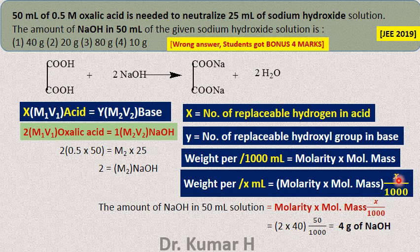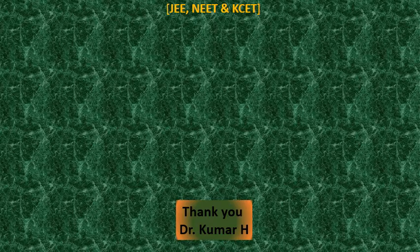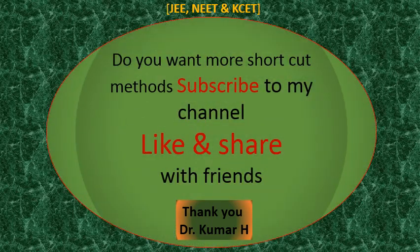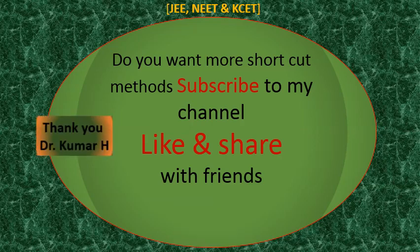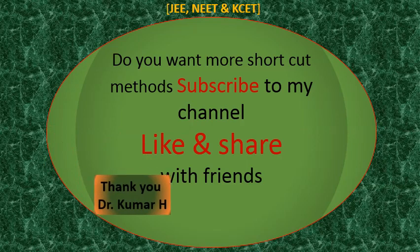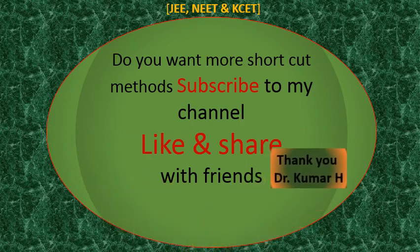Remember these two formulas: X × M₁V₁ = Y × M₂V₂ for acid-base titration, where X is replaceable hydrogens and Y is replaceable hydroxyl groups; and weight of material for x ml = molarity × molecular mass × (x ÷ 1000). With these two formulas, you can answer almost all questions on volumetric estimation. Please subscribe to my channel, like this video, share with your friends, and thank you very much.